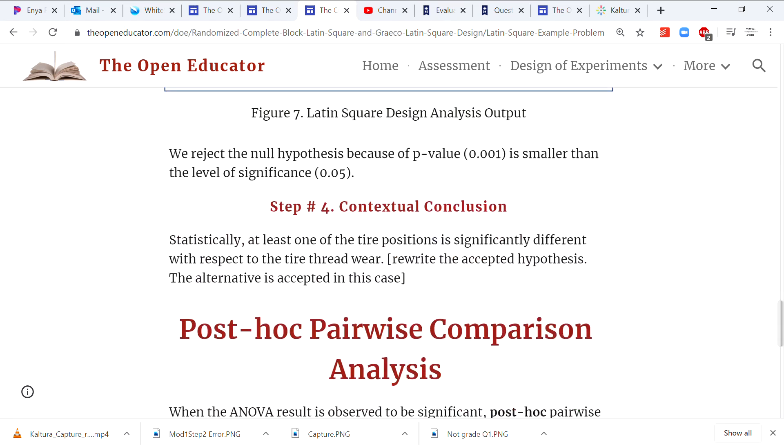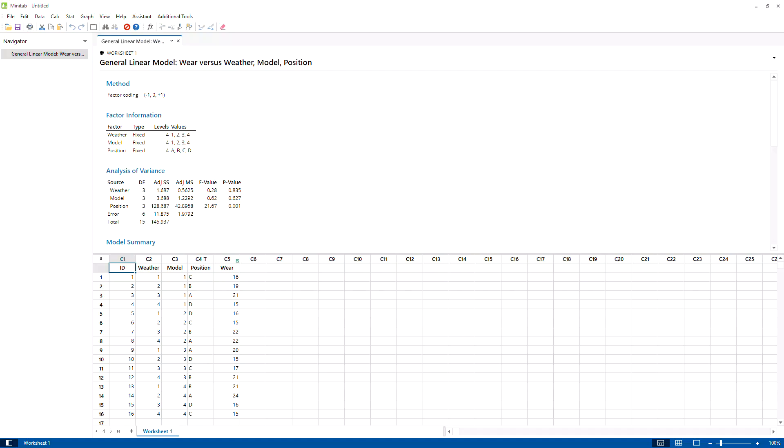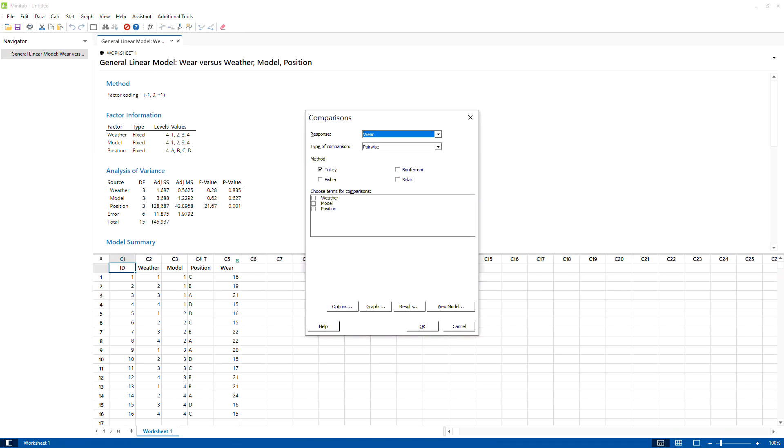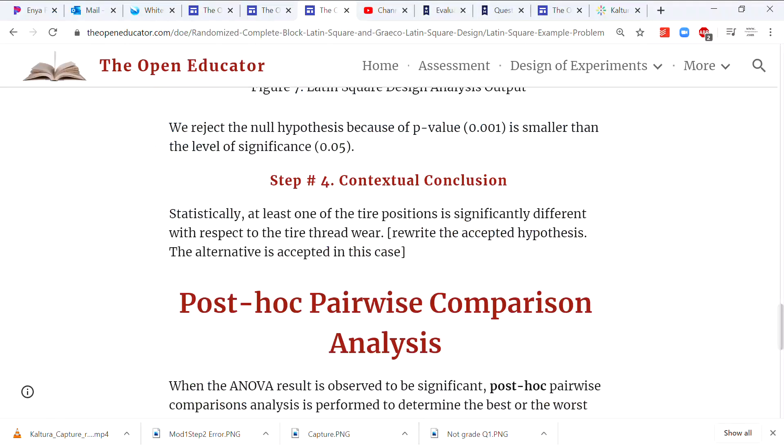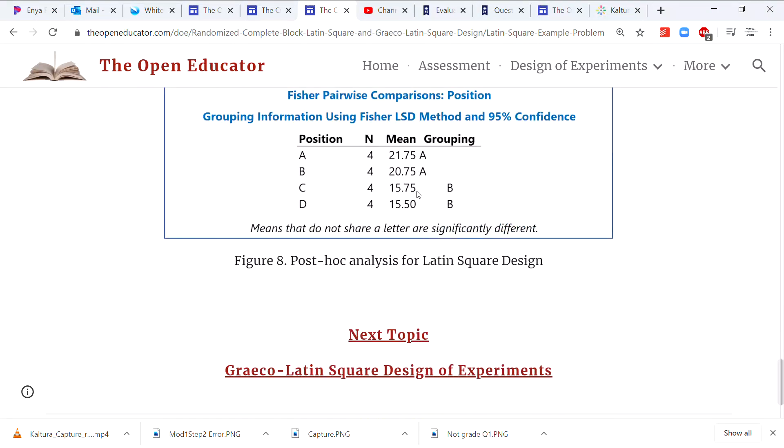So then you run a post-hoc analysis. Let me show you how to do that. Simply can go to Stat, ANOVA, generalized linear model, comparison. Just select only position because that's the only thing significant. As you can see here that the front two were significantly more than the rear two. So you can see here the result.